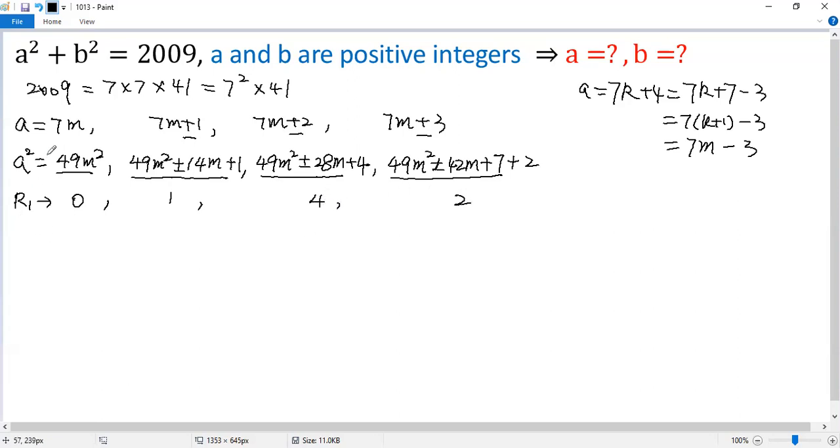Similarly, when b is divisible by 7, we can write it as b equals 7 times an integer if the remainder is 0. Similarly, 7n plus or minus 1, 7n plus or minus 2, 7n plus or minus 3. So b squared equals 49n squared. I don't want to waste time.